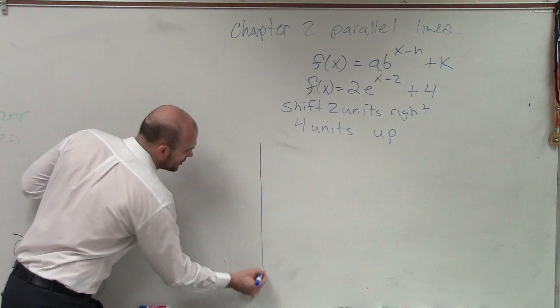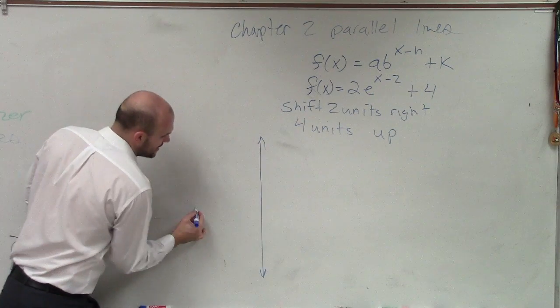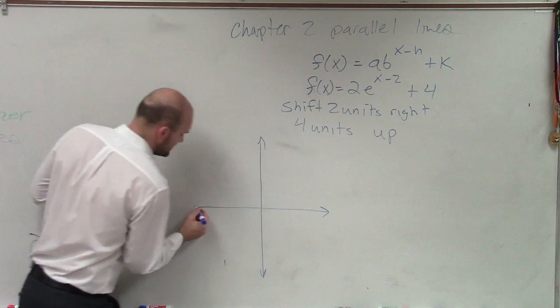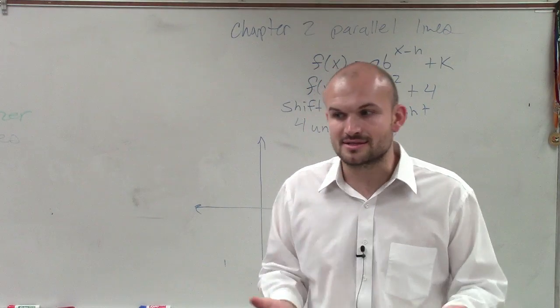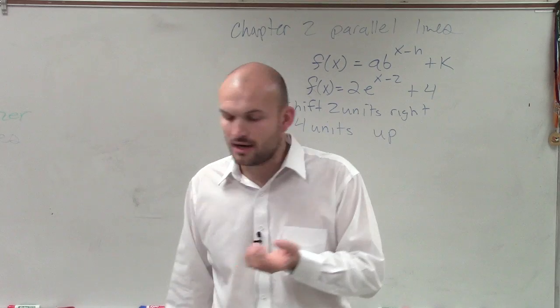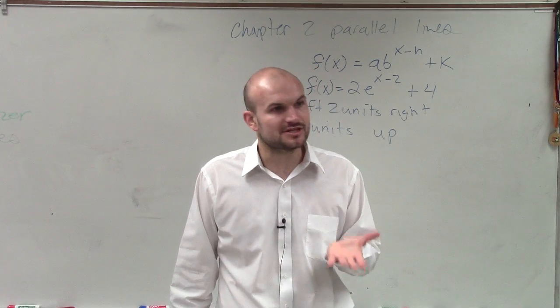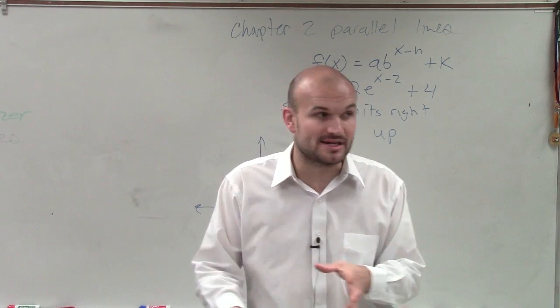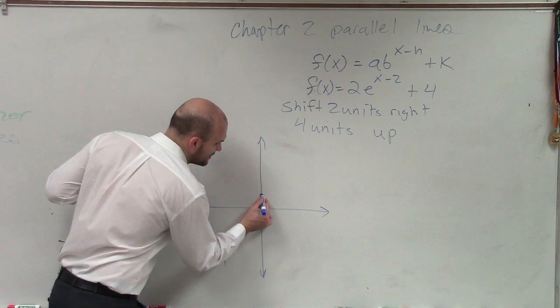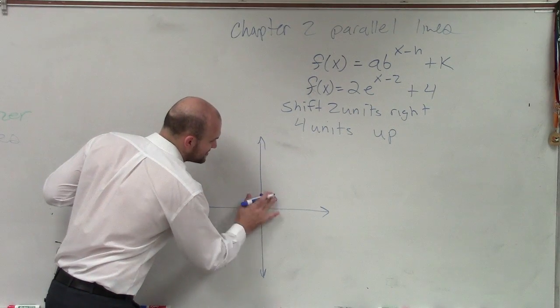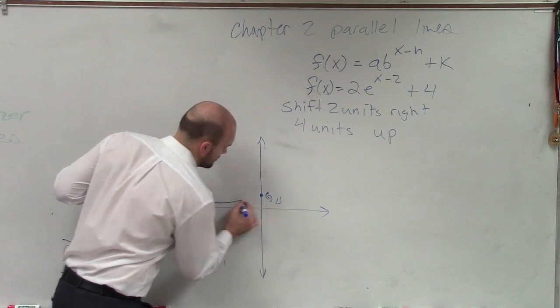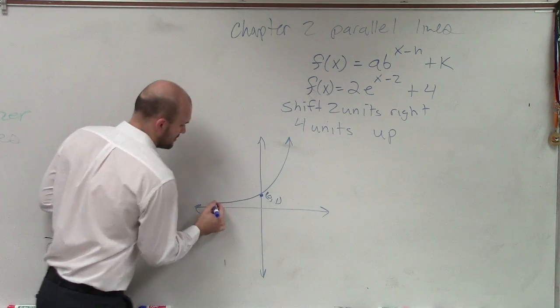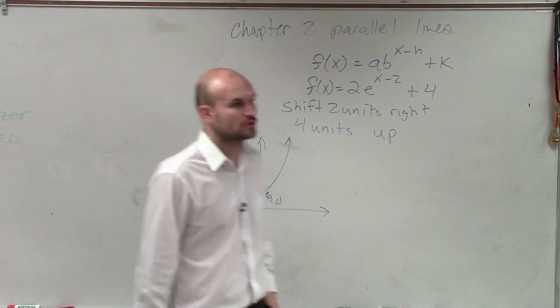The next step is, we need to know what the parent graph looks like. And what I tried to really instill with you, because we didn't do an example with e, but what I really tried to instill with you guys is when you have your exponential, we know that unless there's transformations, you are always going to have a y-intercept at 1 comma 0. I'm sorry, at 0 comma 1.